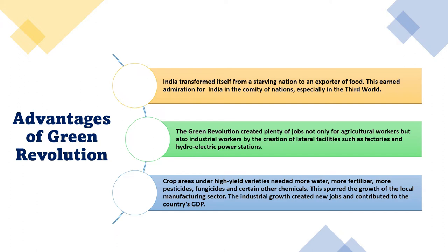As for the advantages of the green revolution, India transformed itself from a starving nation to an exporter of food, earning admiration in the international community, especially among third-world countries. The green revolution created plenty of jobs not only for agricultural workers but also for industrial workers through the creation of lateral facilities such as factories and hydroelectric power stations. Crop areas under high-yielding varieties needed more water, fertilizer, pesticides, and other chemicals, spurring growth of the local manufacturing sector.